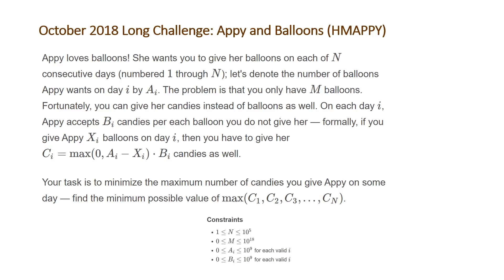The constraints for this problem are: the number of days n is between 1 and 10^5, the number of balloons m you start with can be up to 10^18, and the number of balloons requested and candy cost per day are each between 0 and 10^9.